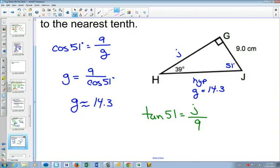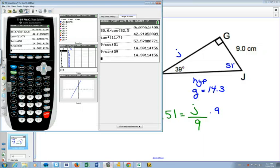And here 51 is better than the 39 because the j is on the top, which means the math is a little bit easier to get j by itself. We just have to multiply both sides by 9. And 9 tan 51 is 11.1.